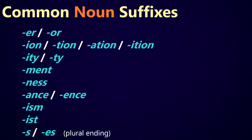Other noun suffixes include the -ance or -ence ending, the -ism ending like realism or racism, the -ist ending like realist or racist, and the -s or -es ending which is the plural ending for nouns. It's very useful to know the most common suffixes for each word type, because a suffix will usually change the type of a word — for example, turning a verb into a noun. If you know the most common suffixes, they're an easy way to identify the word type.